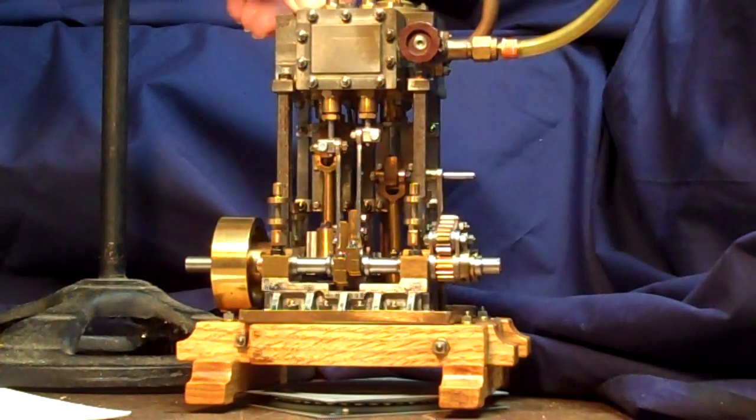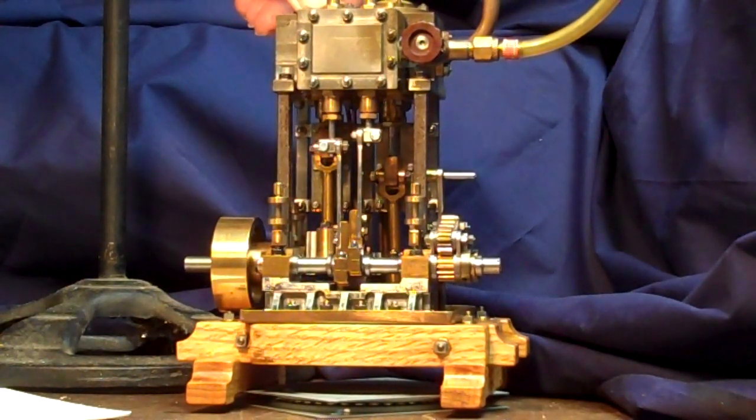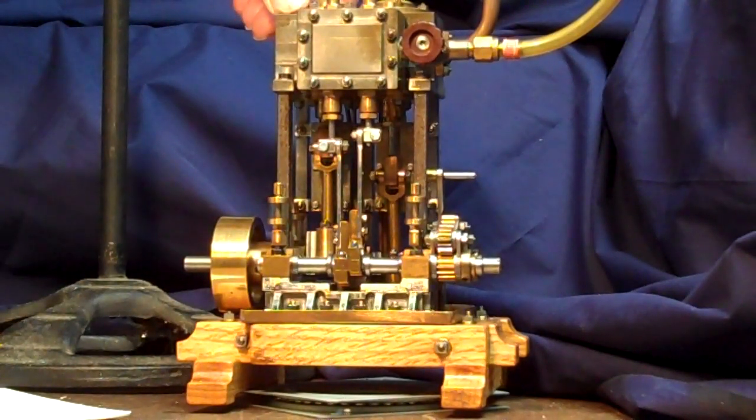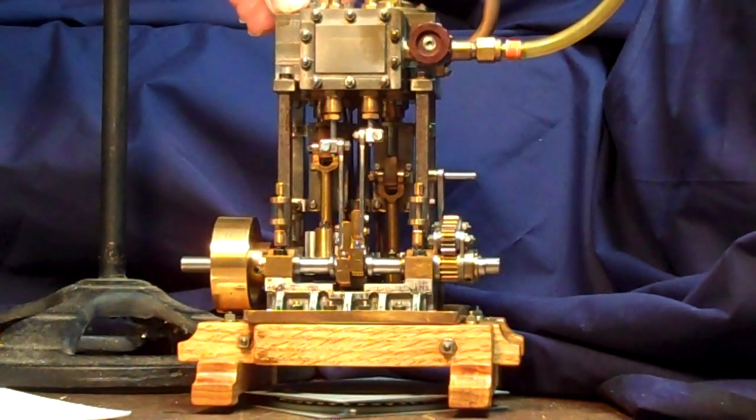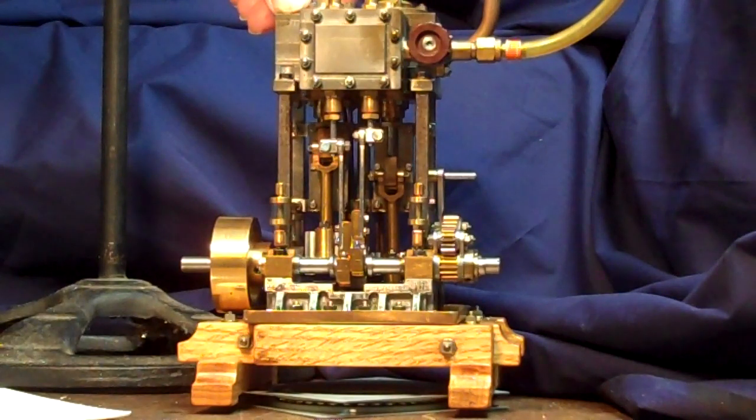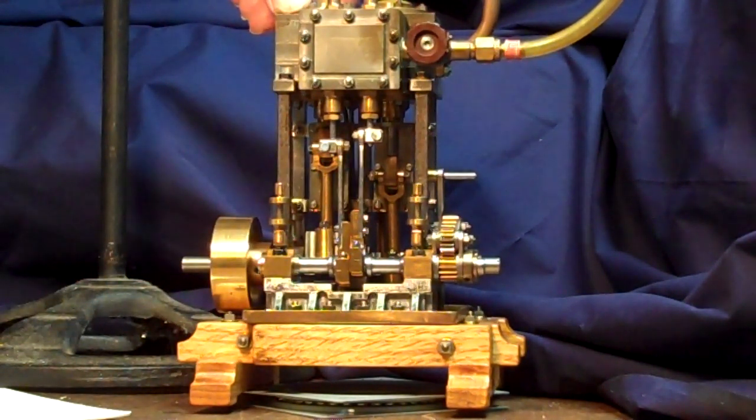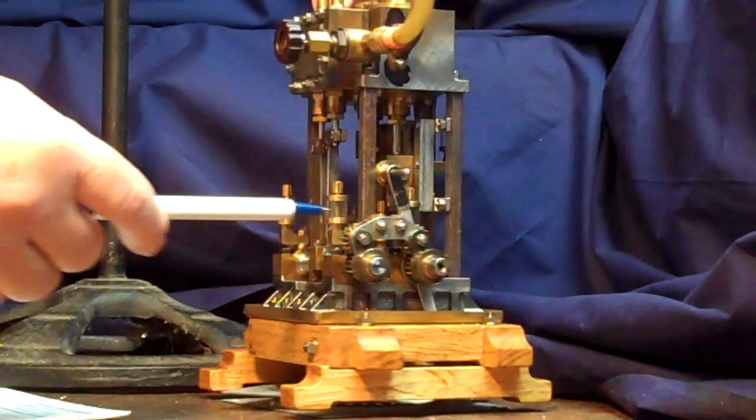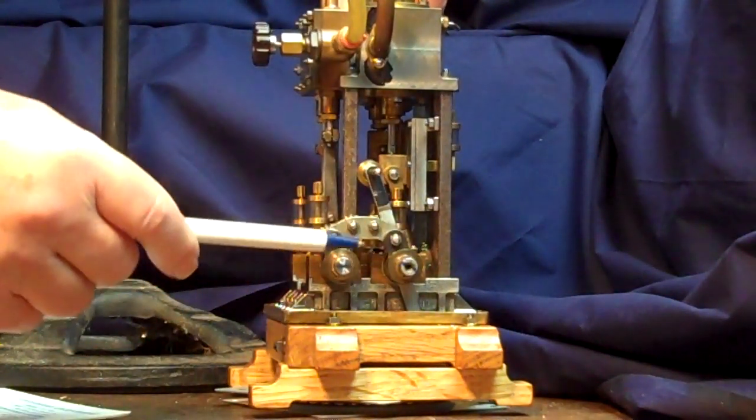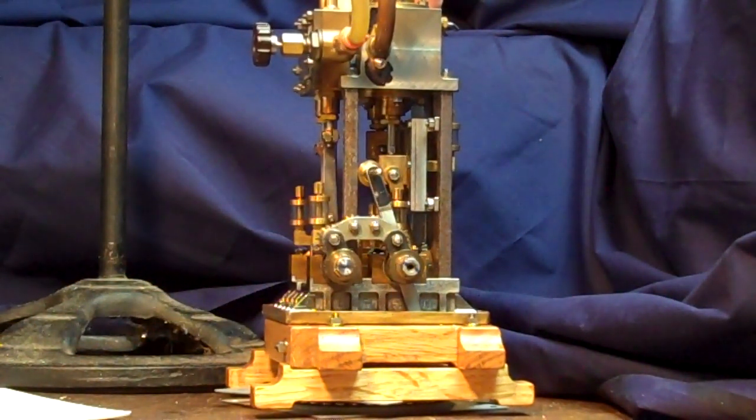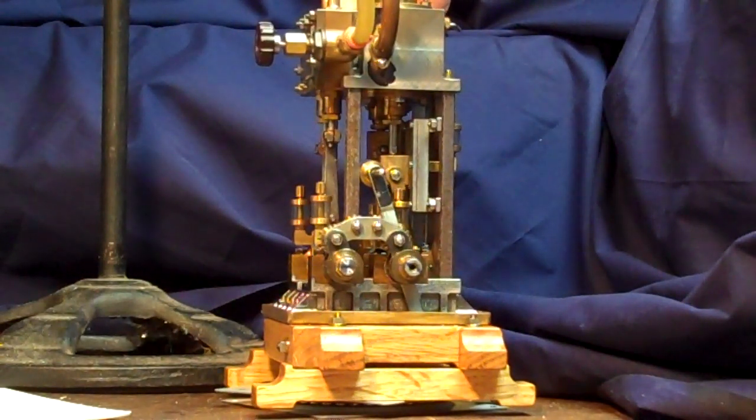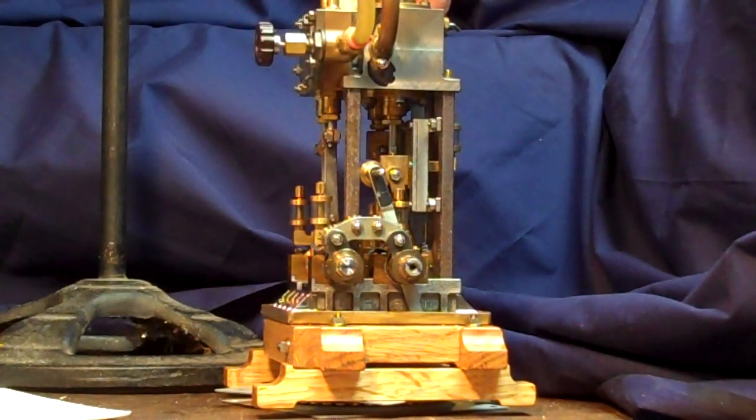Now no castings were used at all for constructing this engine. The cylinder block is cast material, Meehanite, but that was a solid block and it was whittled from that. The base is hot rolled steel. The crankshaft and eccentric shaft were machined from C1144 steel, also known as stress proof.